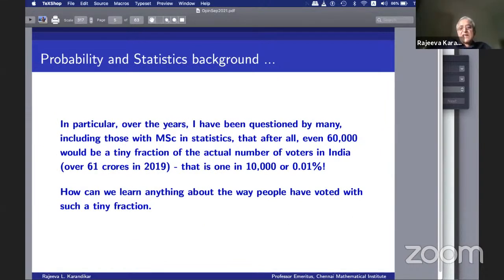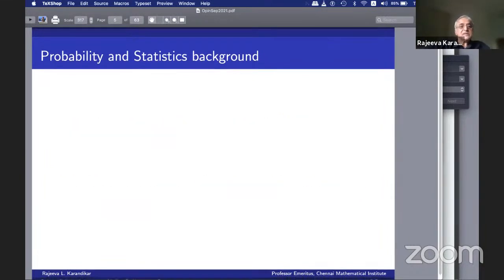Over the years, I have been questioned by many, including some with MSC in statistics, that after all, even 60,000 would be a tiny fraction of actual number of voters in India. In 2019, actually 61 crore voters voted. And even if I had 60,000 sample, that is 1 in 10,000 or 0.01%. How can this tell us anything about what is going to happen in the country?